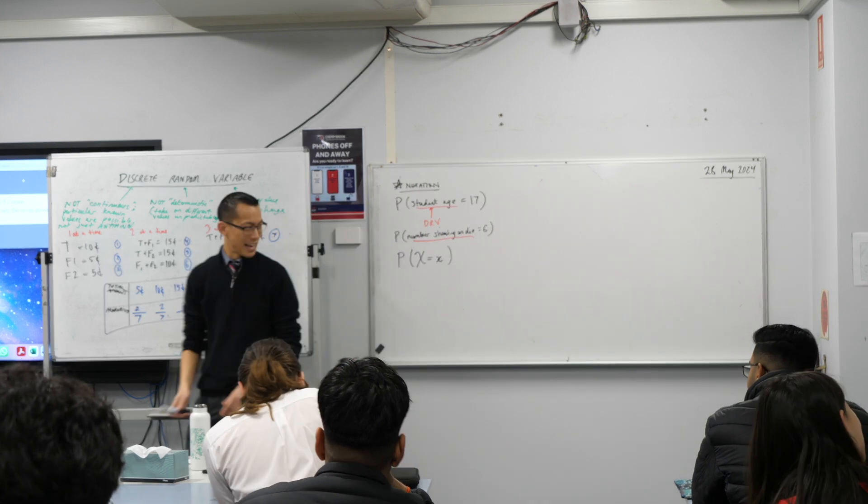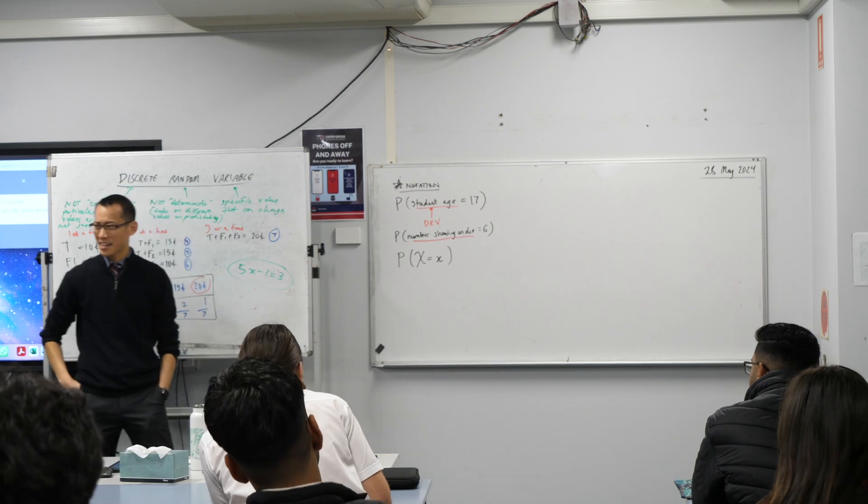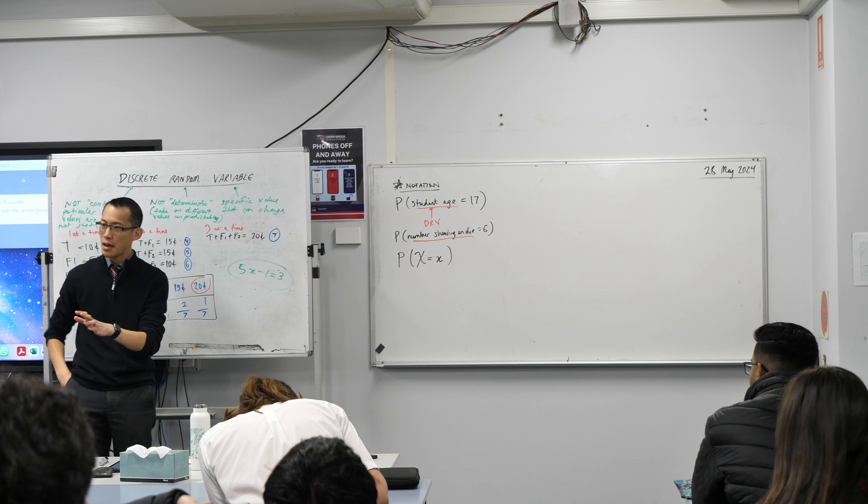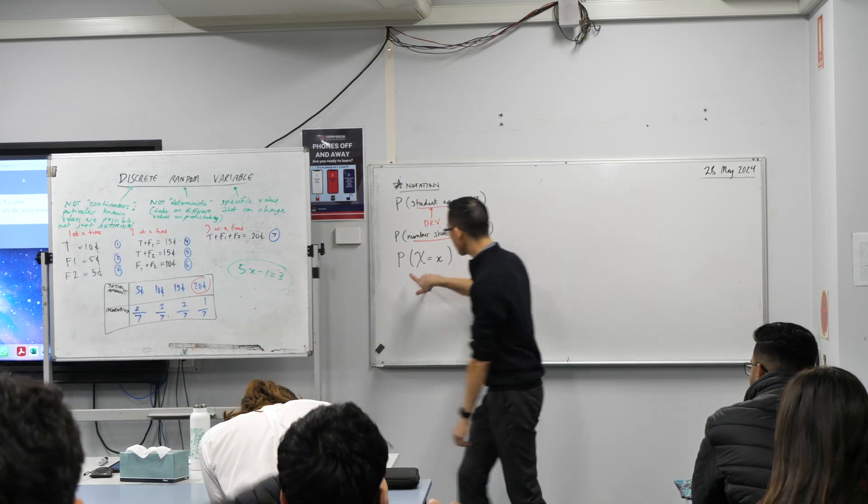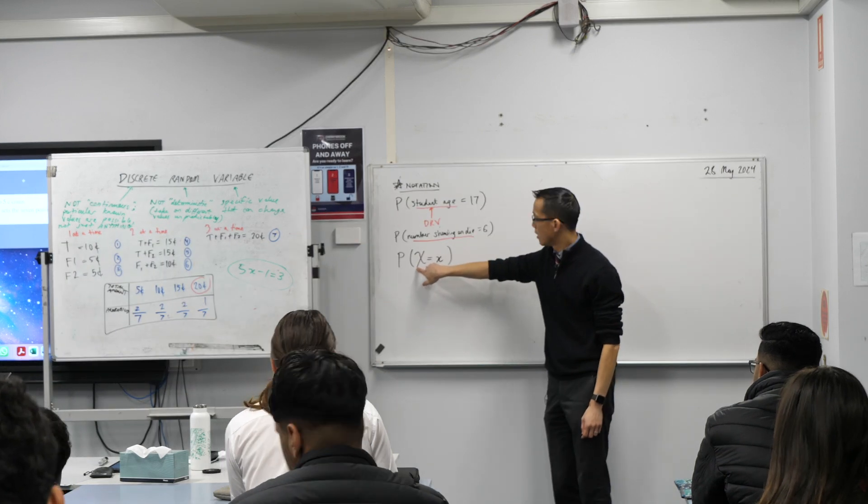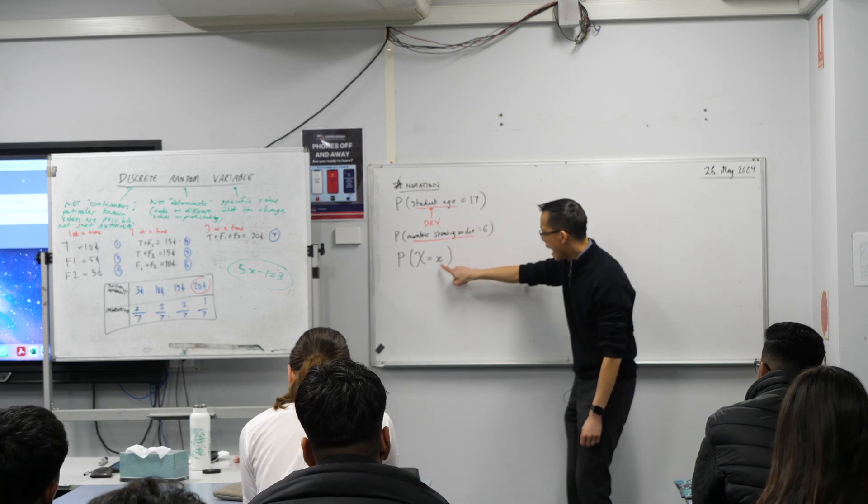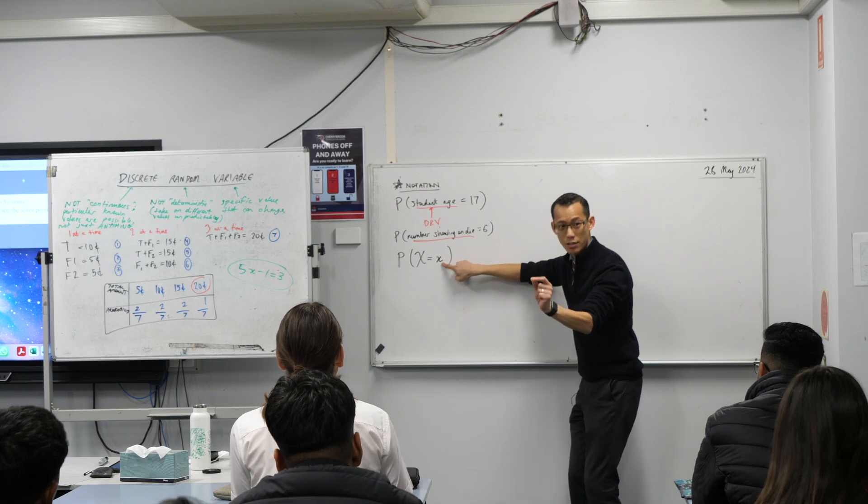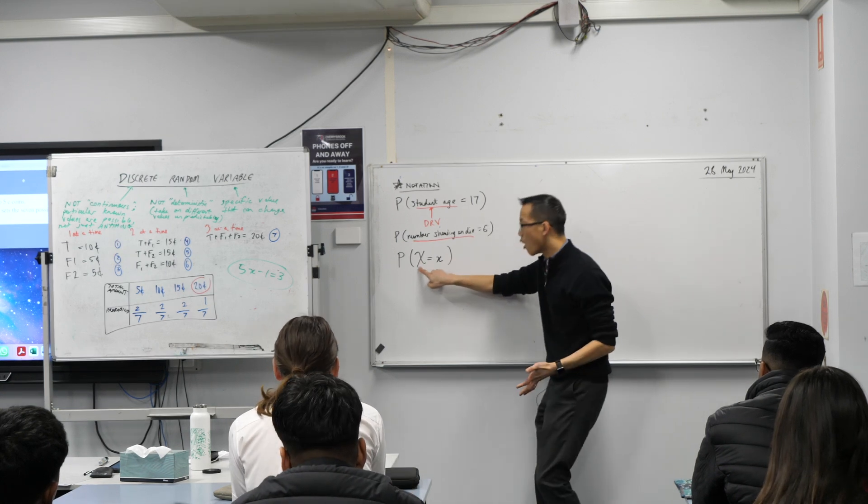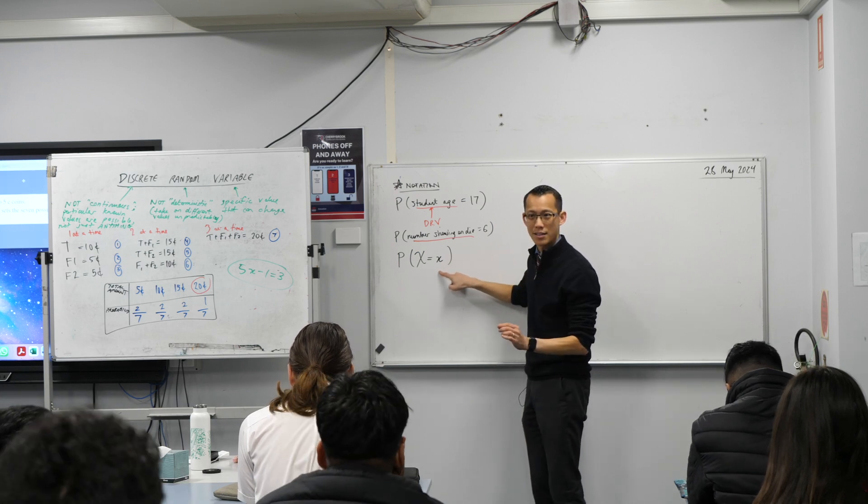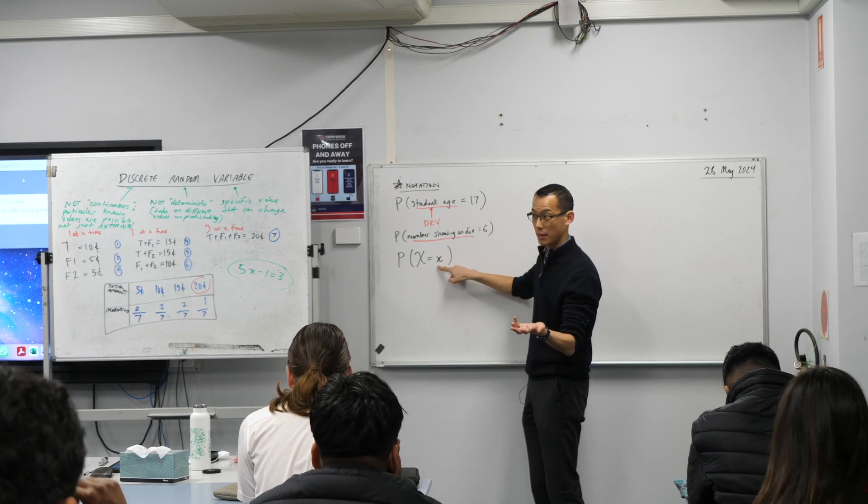Now, if you're like me, you look at that, you're like, the probability that x is x? Are you trying to make this hard for me? Answer, no, they're not trying to make it hard. They're trying to show that these two things are related, right? This is the discrete random variable, like student age or the number on the die, and this is a particular version or a particular instance of this, right? It's like a kind of a snapshot in time, as it were, or the person who you randomly pick.